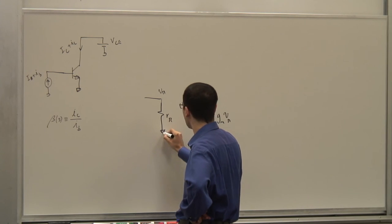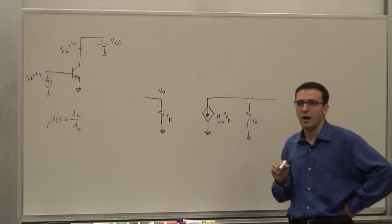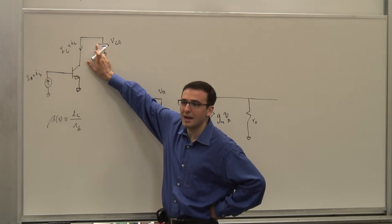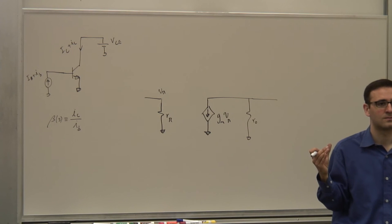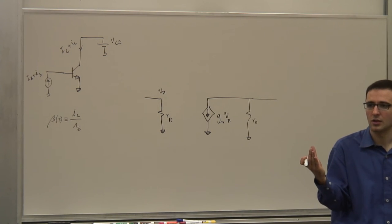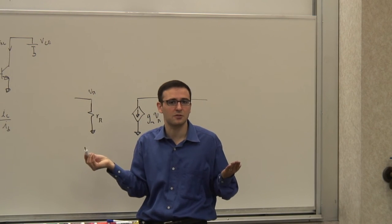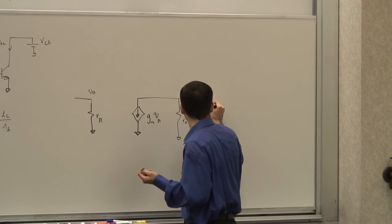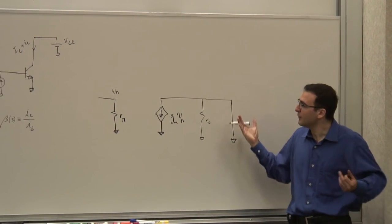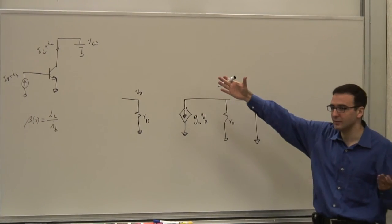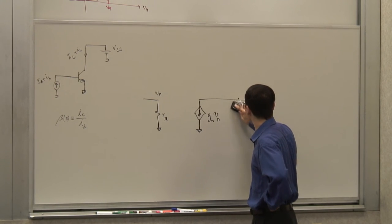I have Rpi, and the emitter terminal is ground. Let's ignore the physical resistors and Rmu — we know those are large. From an incremental small signal perspective, the battery connected to the collector is a fixed voltage, so any derivative of a fixed quantity is zero. All fixed voltages become ground in the small signal model. So the DC supply is effectively an AC short to ground.